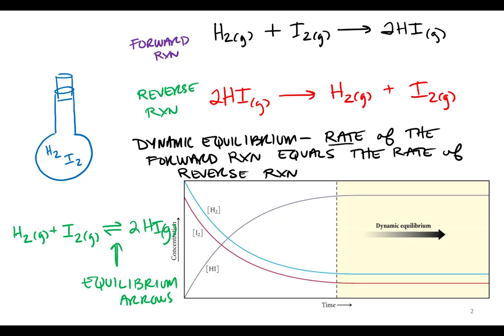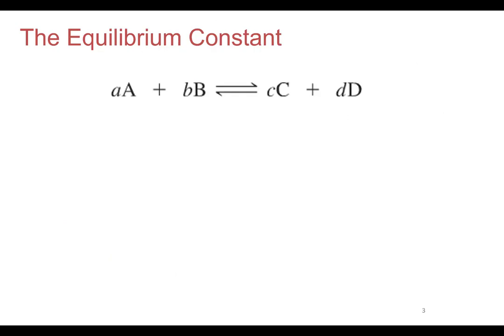We can write both equations just one time by using our back-and-forth equilibrium arrows. One thing we're going to want to do is express those concentrations — whatever they are, even though they're not changing under equilibrium conditions — and we do that with an equilibrium constant, which is an uppercase K.